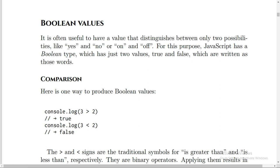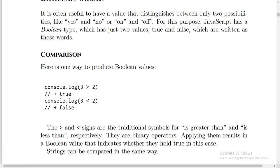What about comparison? Here is one way to produce Boolean values, like this example. Console.log(3 > 2). Yes, it's actually true result. Console.log(3 < 2). The result is false.